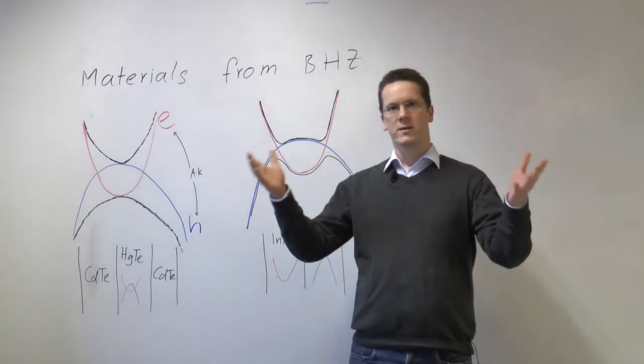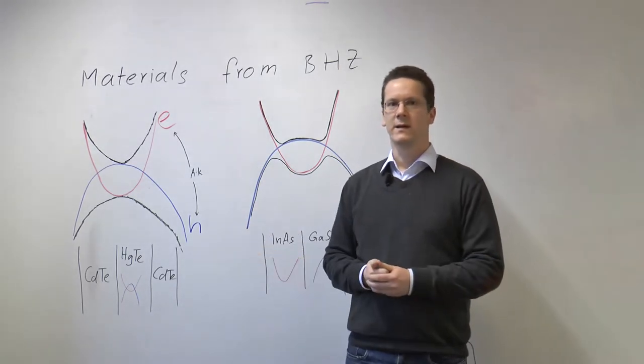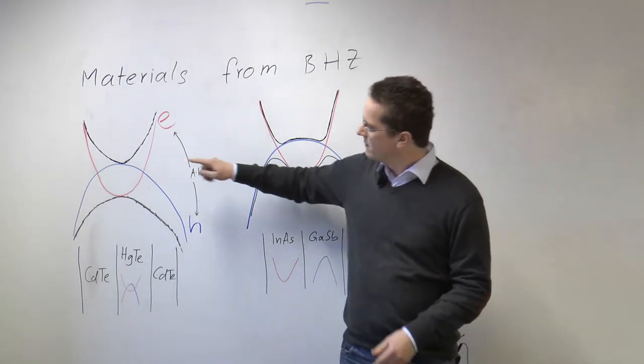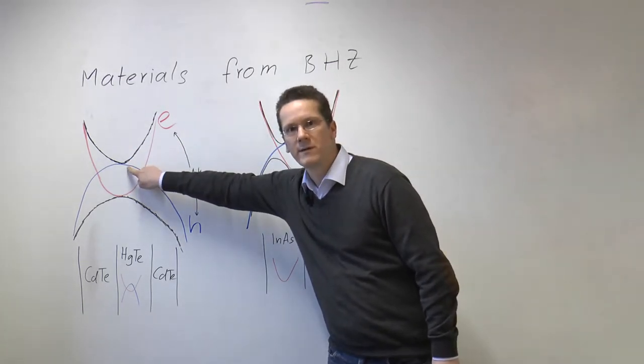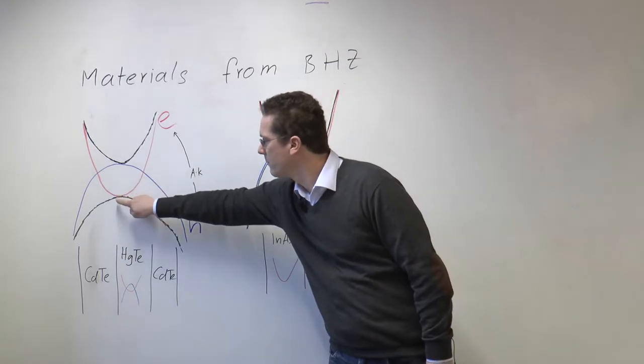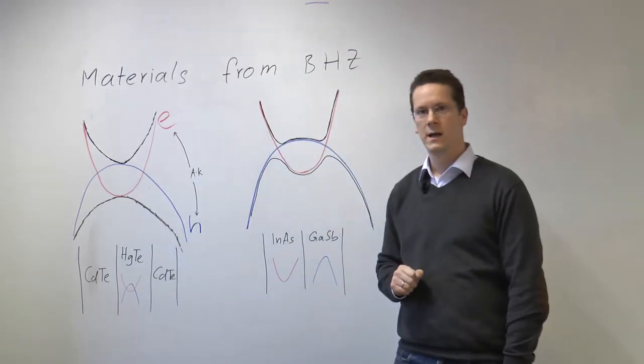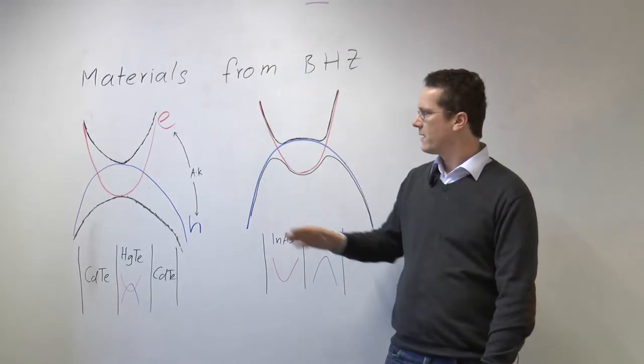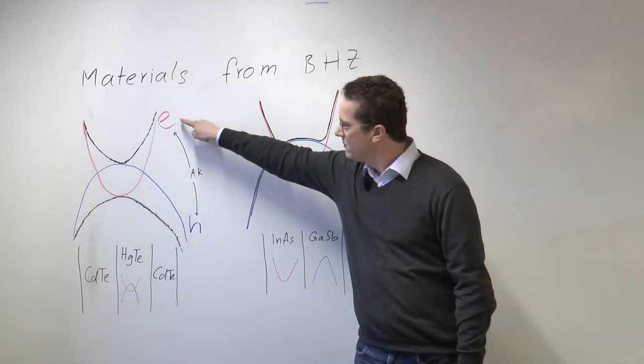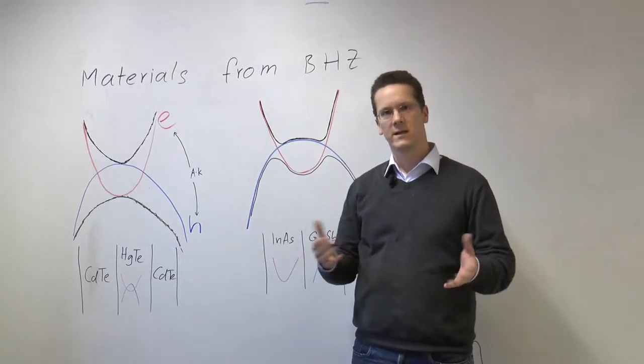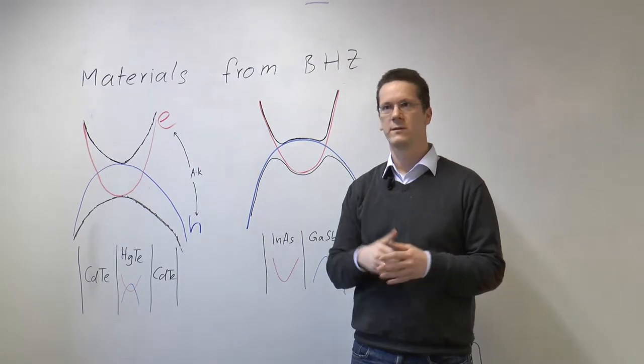In order to be in a topological regime you have to have the band order inverted, that is the band of the holes has to be above the band bottom of the electrons. And as a fourth ingredient you have to have a coupling between electrons and holes that is linear in the momentum. So these are the four ingredients.